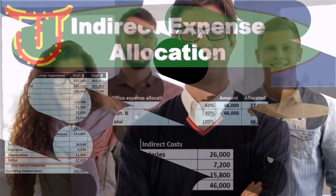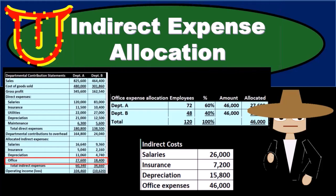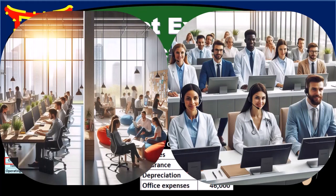In this presentation we will take a look at some examples related to indirect expense allocation. The scenario is that we have these indirect expenses we want to apply them out to different departments, but they are involved in different departments. We need some method to apply these expenses out to those departments.